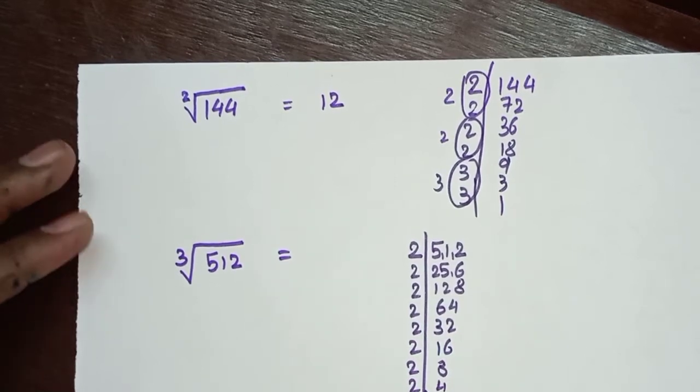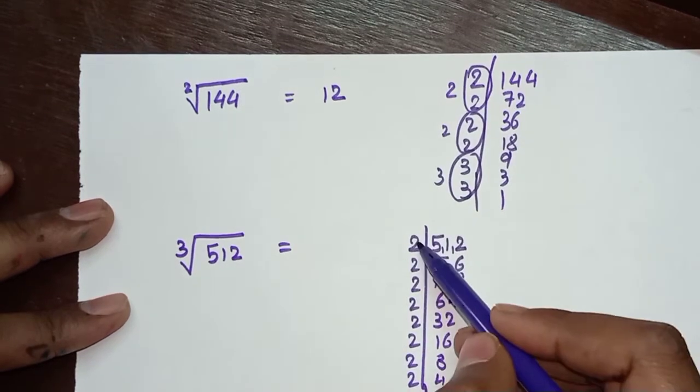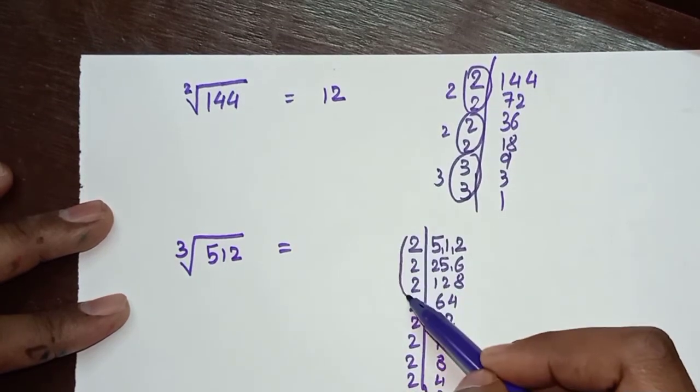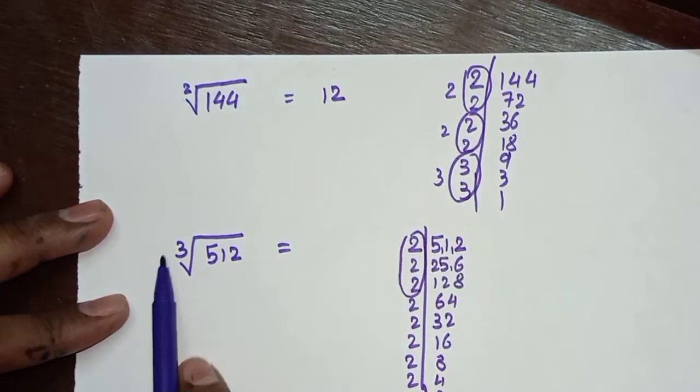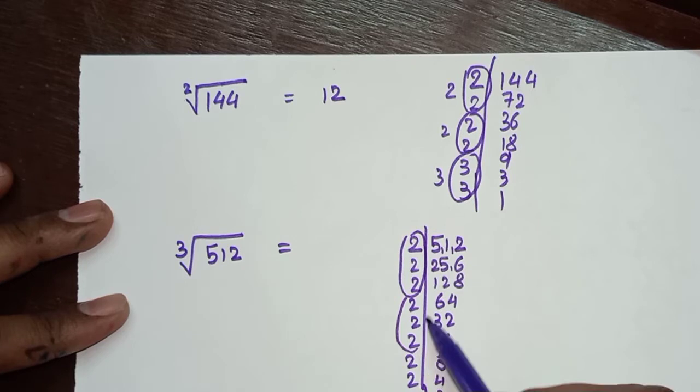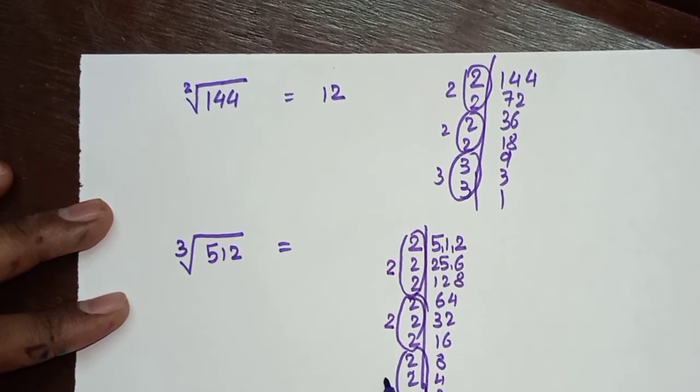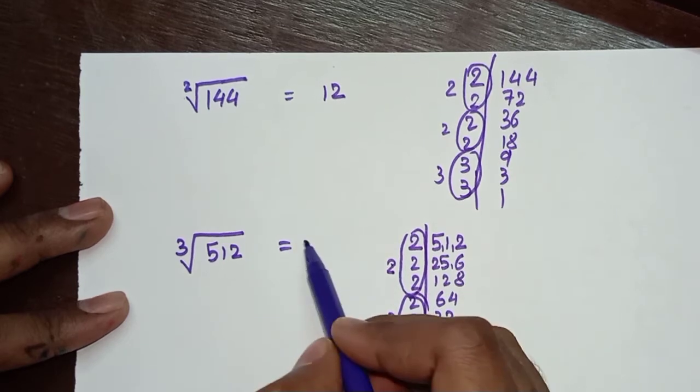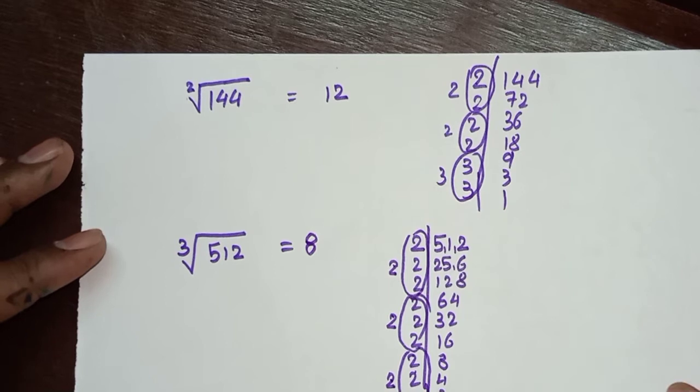So I have factorized 512. Now since we want to find the cube root, we will take a triplet. In square root we take pairs - double numbers. In cube root we take a pair of 3 - and one from each pair. So 2×2×2 means one 2, and 2×2×2 means one 2, and 2×2×2 means one 2. So finally 2×2×2, which equals 8. So the cube root of 512 is 8.